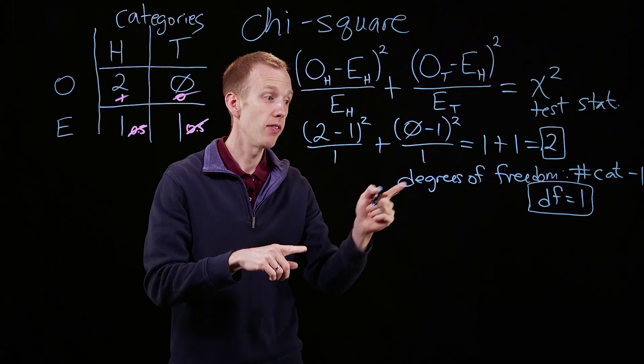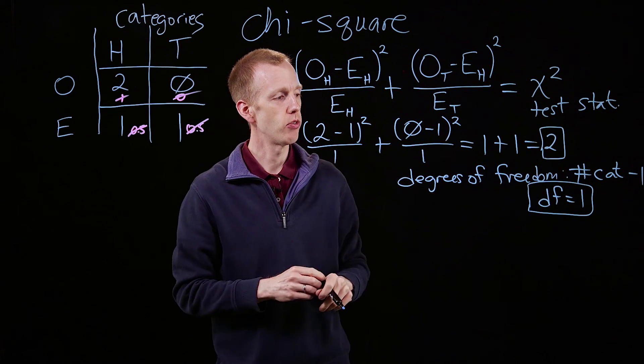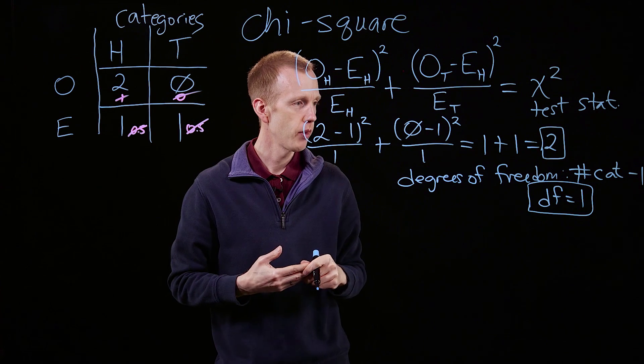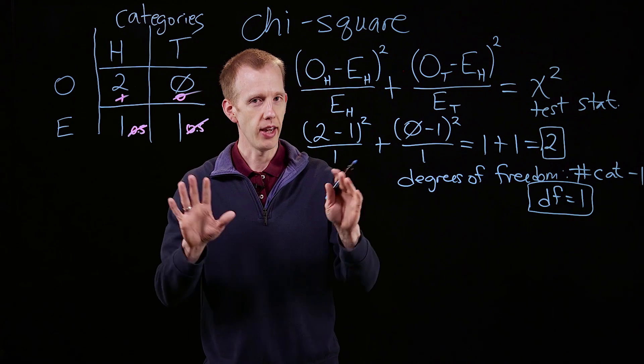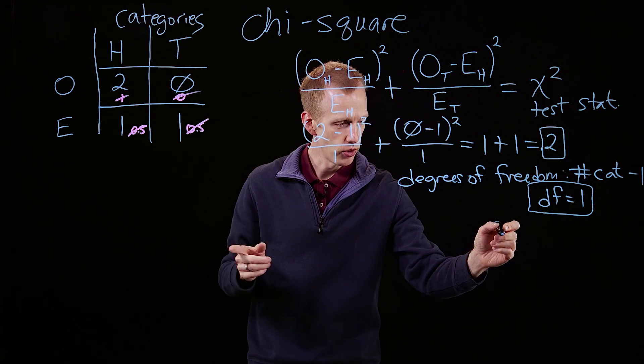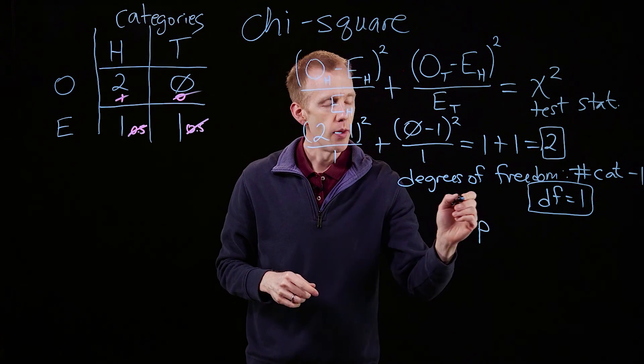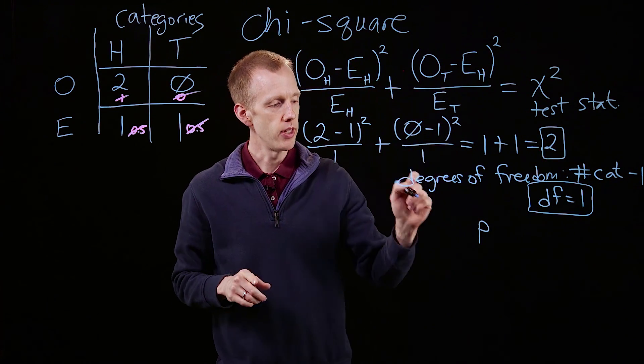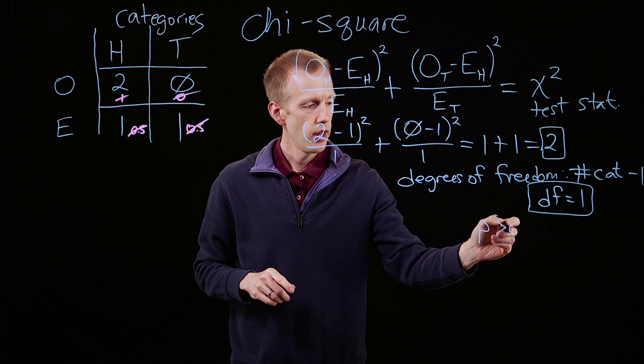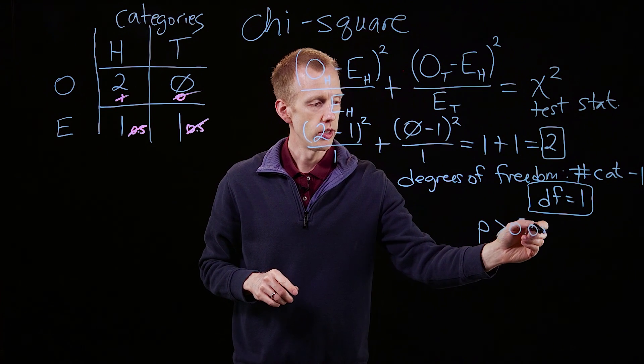To find out the p-value associated with a chi-square value of two with one degree of freedom. And I'm going to tell you now, I can't show you the table right now, but you should definitely look this up. Two degrees of freedom, one. The p-value associated with these results is greater than 0.05.